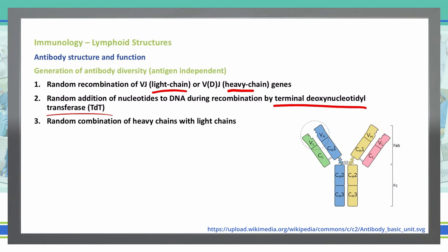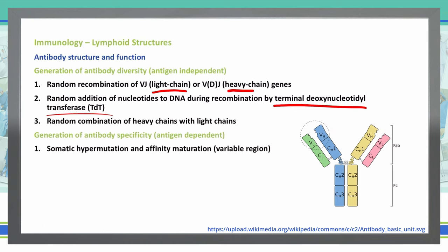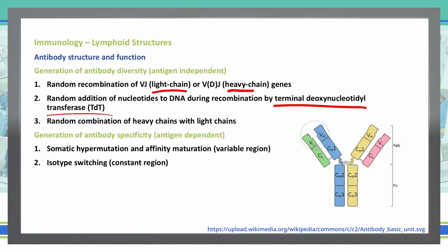Antibody specificity, which is antigen dependent, is going to occur due to somatic hypermutation and affinity maturation in the variable region. Remember, the variable region is at the two tip ends. You have the variable light and variable heavy on both sides — those are the areas where the somatic hypermutation and affinity maturation will occur. Finally, we can also see isotype switching in the constant region, which starts with a C, down in the base portion of the immunoglobulin.